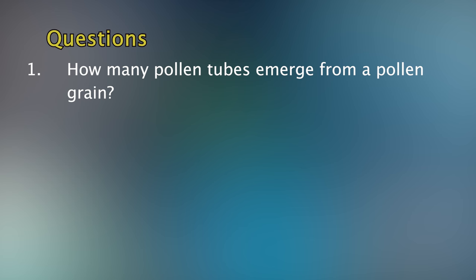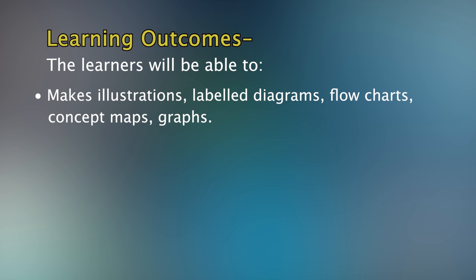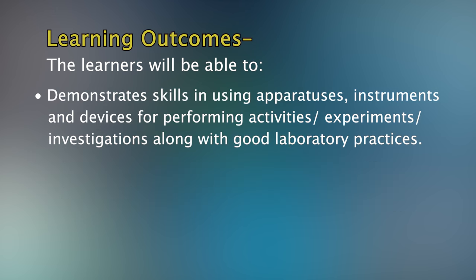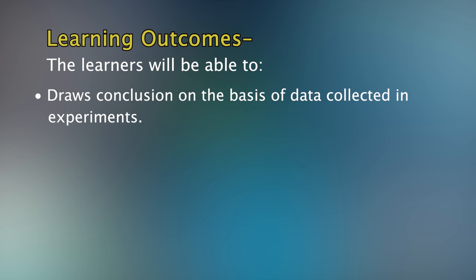Now try to explore the answers to these questions: First, how many pollen tubes emerge from a pollen grain? Second, what does the pollen tube carry? The learning outcomes of this session are: make illustrations, label diagrams, flowcharts, concept maps and graphs; design and implement feasible experiments to verify facts, principles, and phenomena addressing specific scientific questions; demonstrate skills in using apparatus, instruments, and devices for performing experiments along with good laboratory practices; and demonstrate the ability to analyze data statistically, represent in tables, interpret results, and draw conclusions on the basis of data collected in the experiment. Thank you.